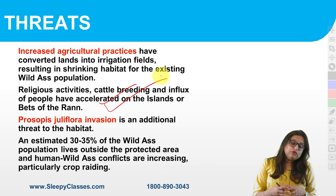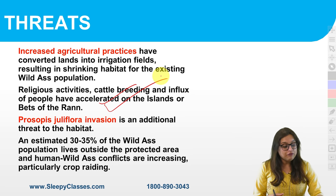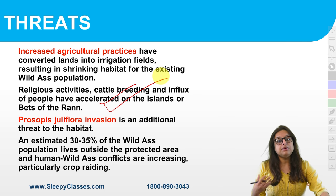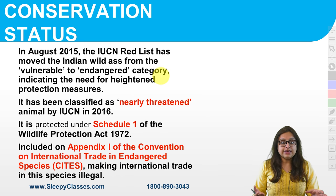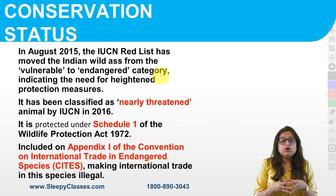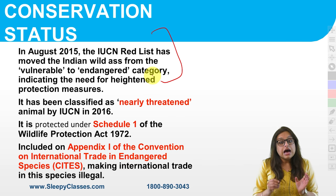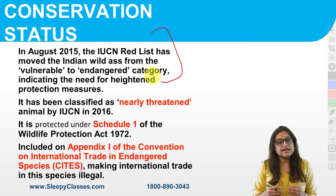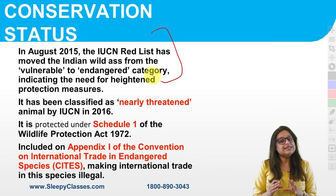Because of all these reasons, human-wild ass conflict has increased and their numbers have decreased. These threats are still quite rampant and show no easy resolution in the near future. What is important for UPSC? Conservation status. The earlier status was Endangered, but the present IUCN status is Near Threatened, which was updated in 2016.